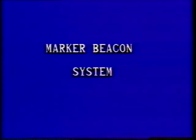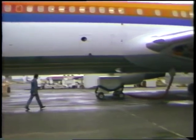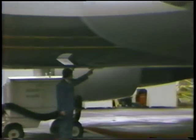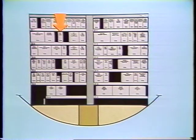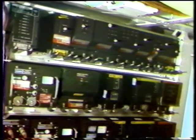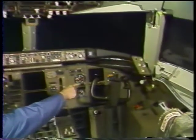The next system covered is the marker beacon system. Power is provided through the left VOR circuit breaker on the P11 panel. The marker beacon antenna is located at station 680. The left VOR marker beacon receiver is mounted in the E2-2 rack in the main equipment center. The marker beacon lights are located on the captain's and first officer's instrument panels.